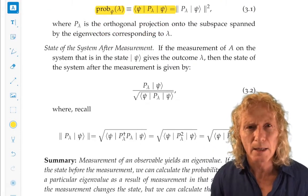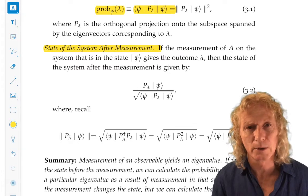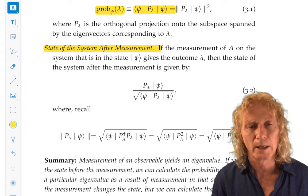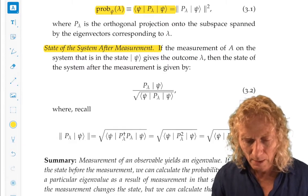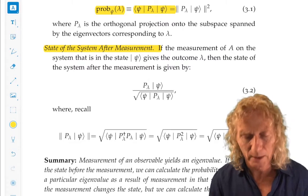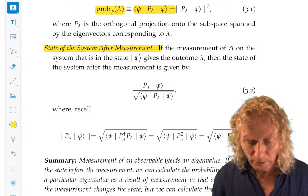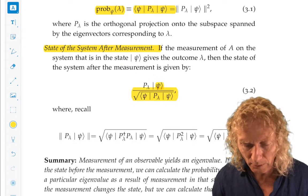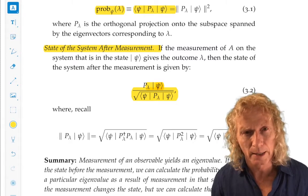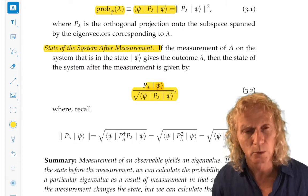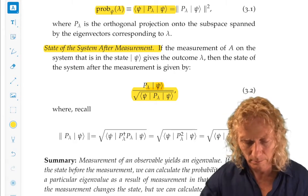Once we make the measurement, we are going to alter the state. It's not going to be ket psi anymore, necessarily, except in a certain special case. If the measurement of A on the system that is in the state ket psi gives the outcome lambda, an eigenvalue, then the state after measurement is given by this expression. It's this orthogonal projection onto the eigenspace corresponding to lambda acting on ket psi and normalized in this way. Remember, we normalize everything.